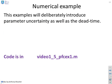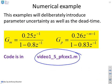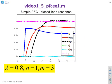So a numerical example to show that this works. Examples are in here, video 1_5_pfc_ex1, which is on the Google site. Here are the G's. You see again we've put in parameter uncertainty deliberately, and you'll notice that we've put a delay into the process. So, example 1, we've chosen lambda is 0.8, n equals 1, and a delay of 3 samples.